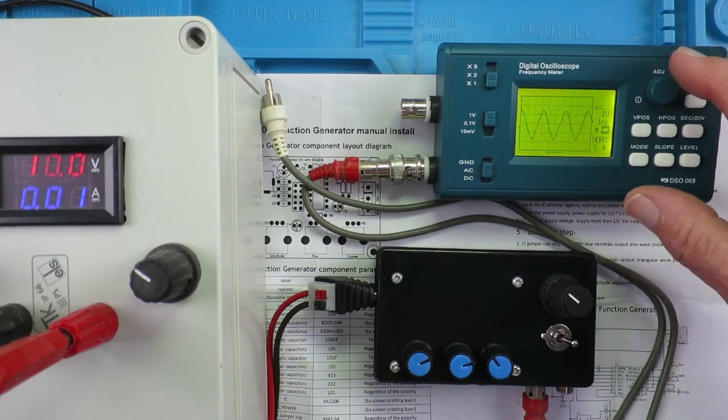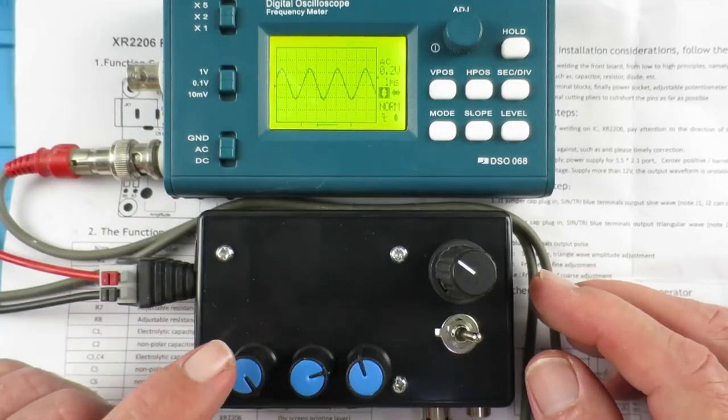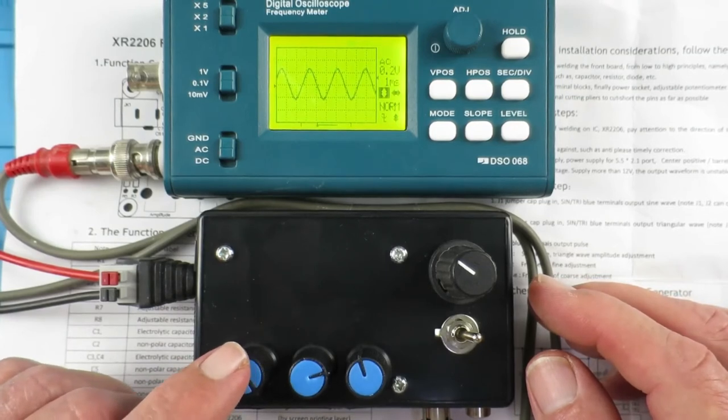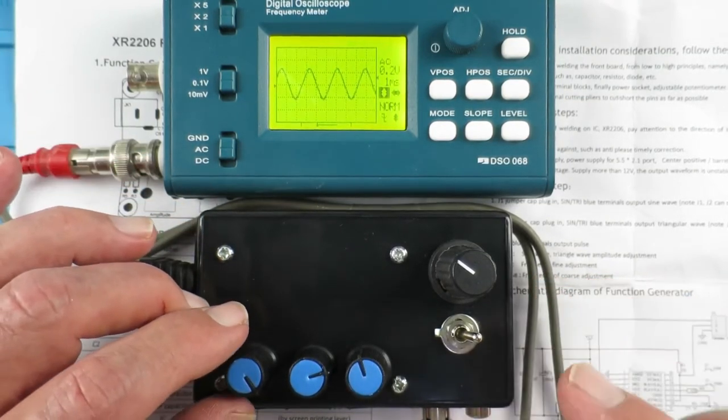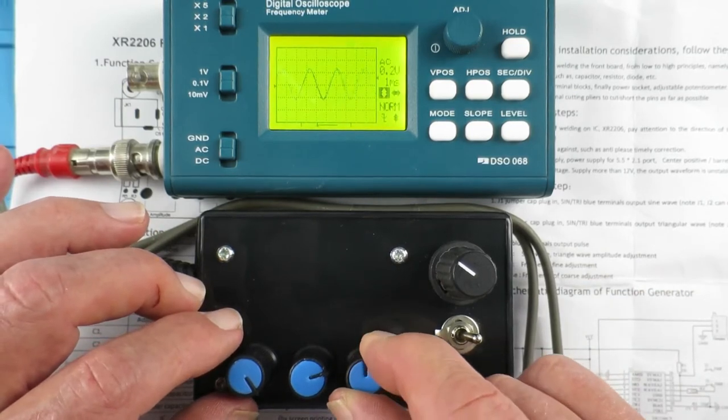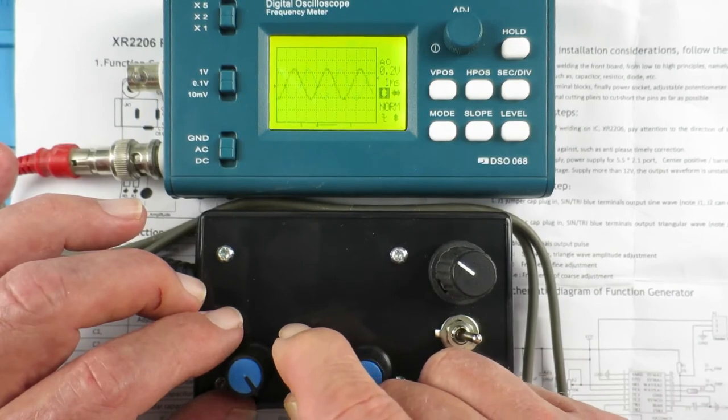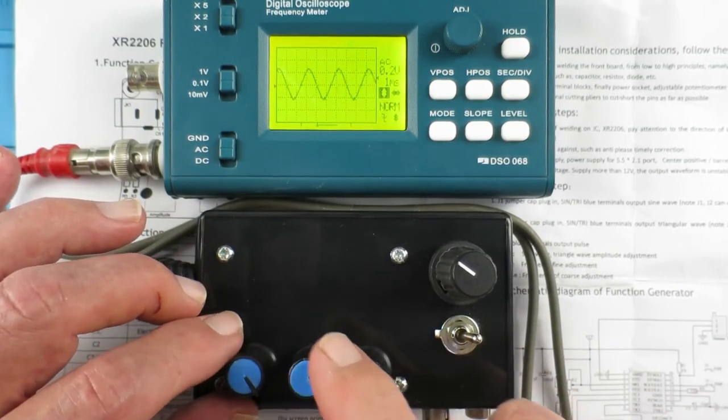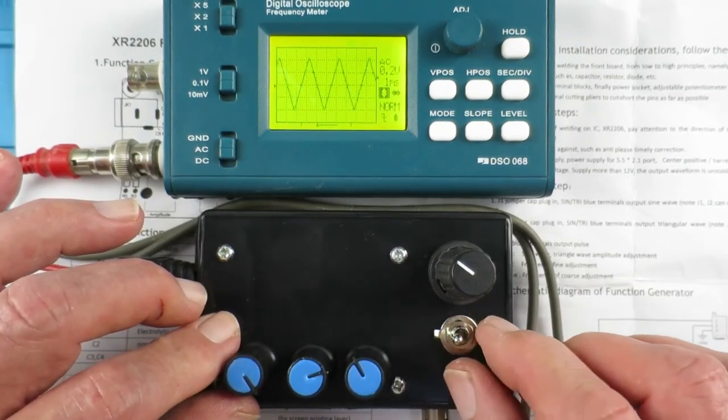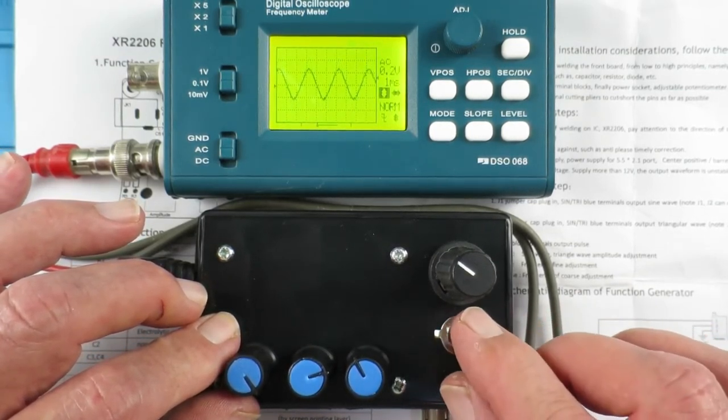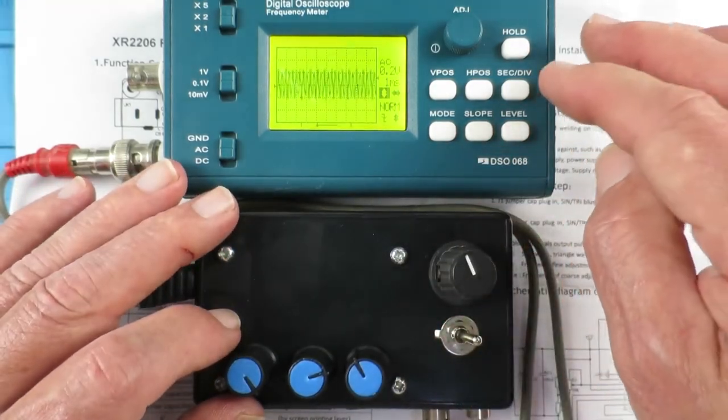So now I'll zoom in on the screen and we'll go through the controls. The controls that we have on the left here is the amplitude adjustment. And on this side here is the coarse frequency adjustment. And the fine frequency adjustment. Here we have the switch for going to triangle and sine.